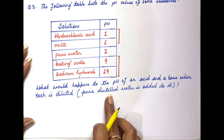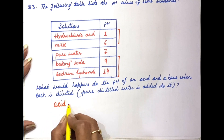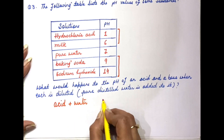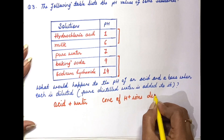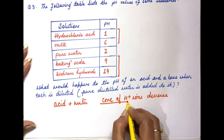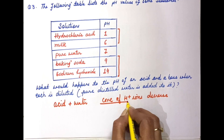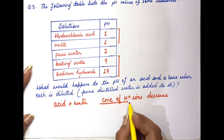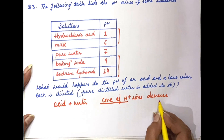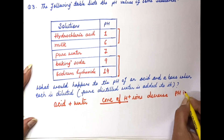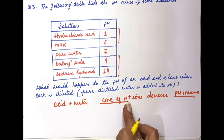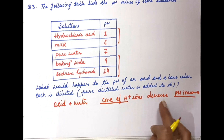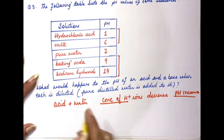Acid और base की pH पे क्या effect पड़ेगा अगर हम इनको dilute करें using pure distilled water. When water is added to acid, the concentration of hydrogen ions decreases. अब जितनी concentration of hydrogen ions जादा होती है, उतनी pH value कम होती है — substance जादा acidic होता है. जैसे हमने water add किया, concentration of H⁺ ions decrease करती है, so pH increase करेगी.